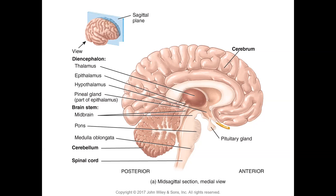Going up from the spinal cord: the medulla oblongata is here, then the pons, the midbrain, and the cerebellum. The diencephalon consists of the hypothalamus, the epithalamus, the pineal gland — which is part of the epithalamus — the infundibulum, and then the pituitary gland with its anterior and posterior portions. We've covered these structures in the endocrine system.